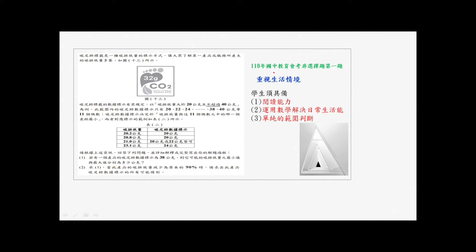今天我们要学的题目是110年国中教育会考非选择的第一题。题目是碳足迹标签是一种碳排放量的标示方式,让大众了解某一产品或服务所产生的碳排放量多寡。如下图13所示,碳足迹标签的数据标示有其规定。